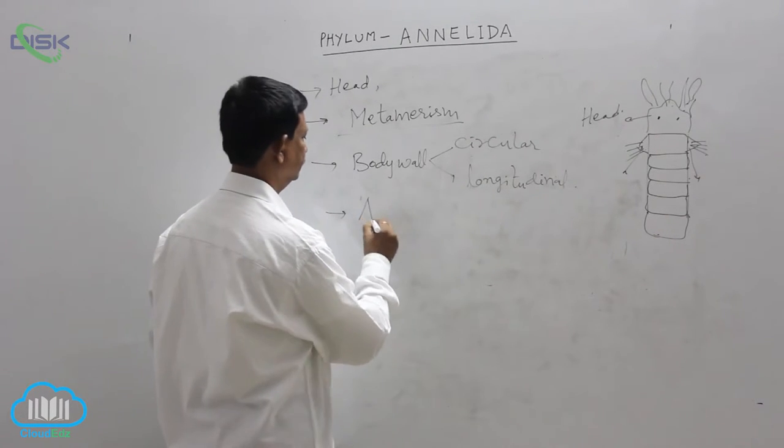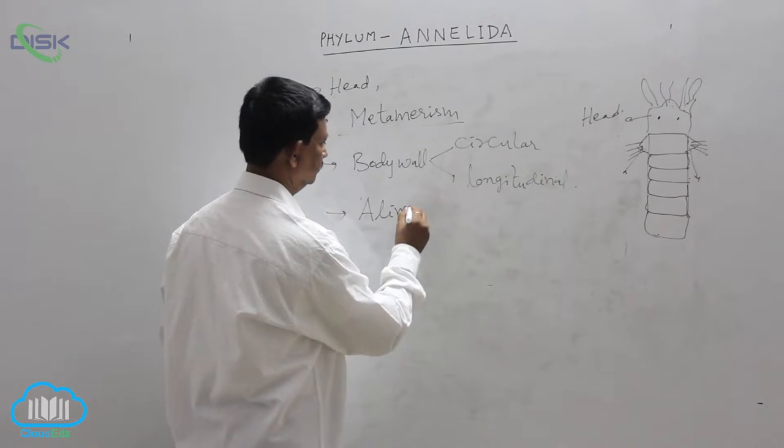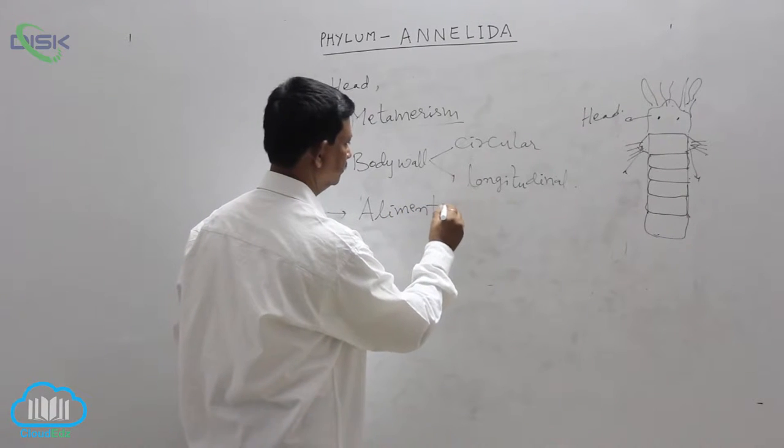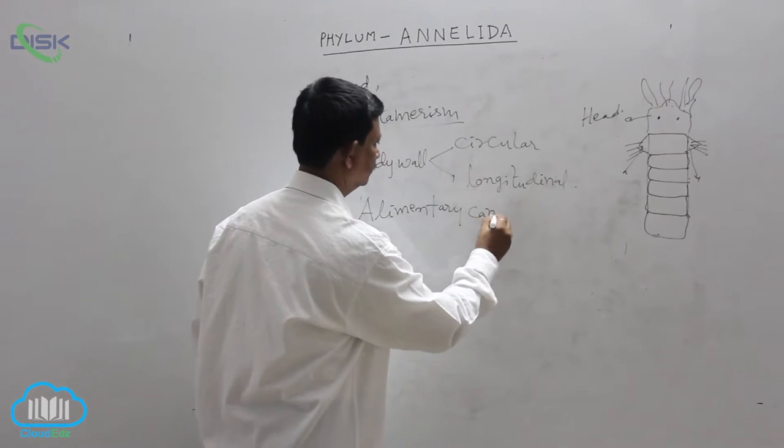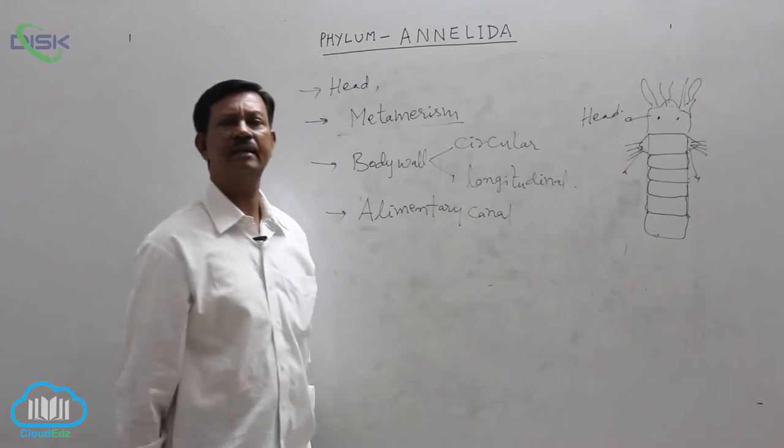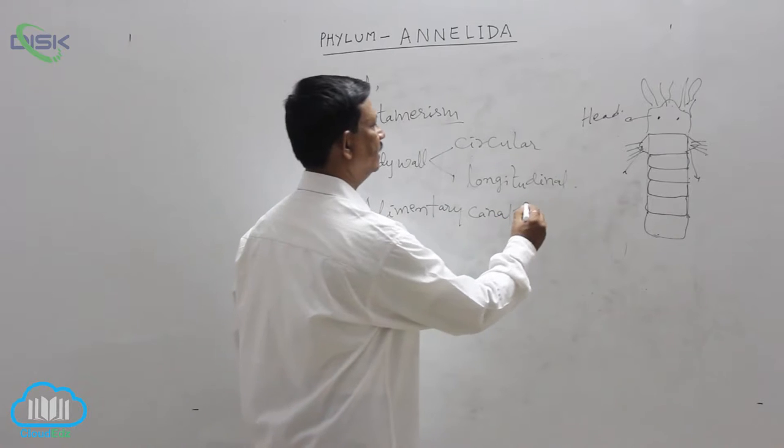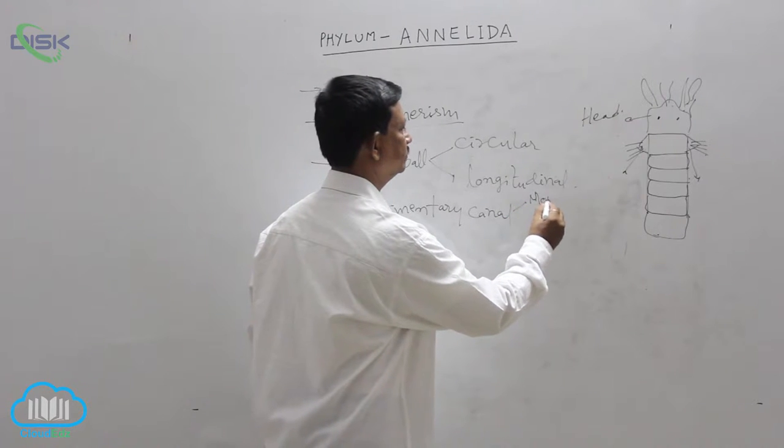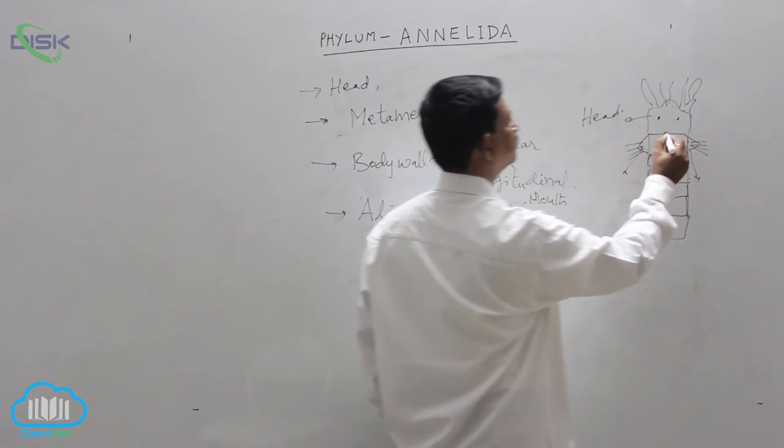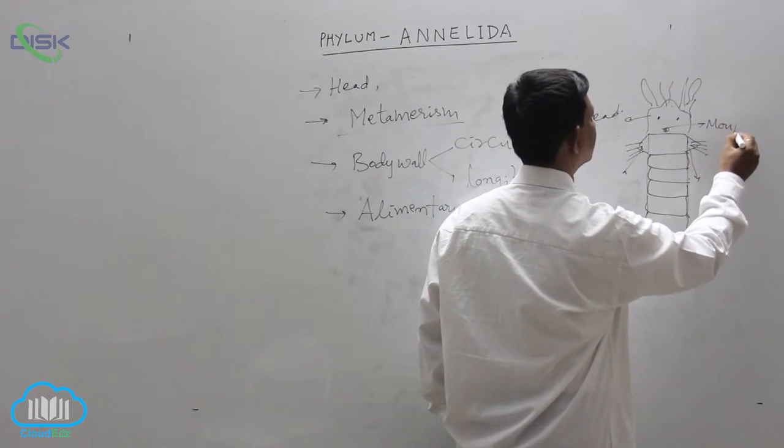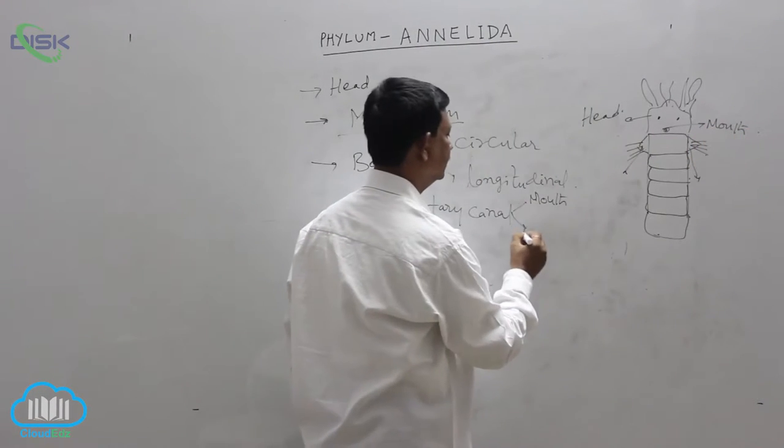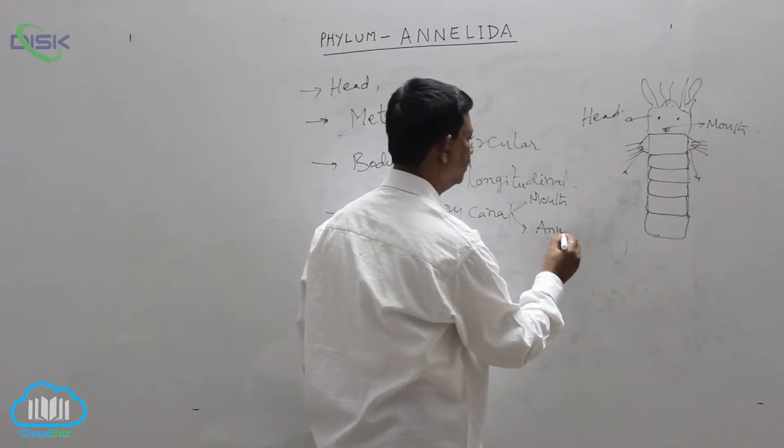This is the alimentary canal. It is straight and mouth is present at the anterior end. Anus is present at the posterior end of the body.